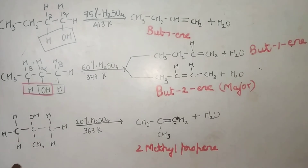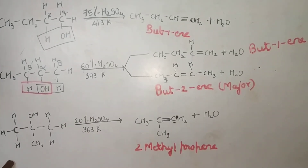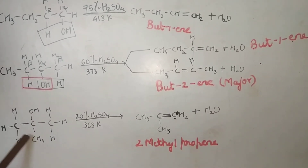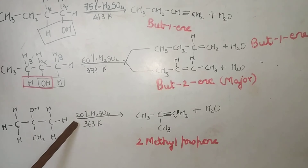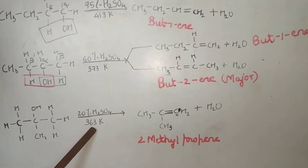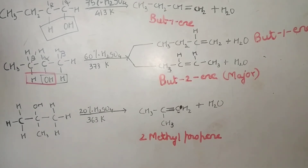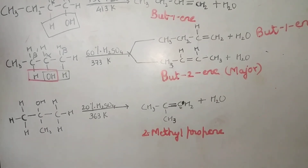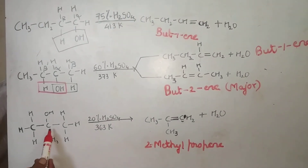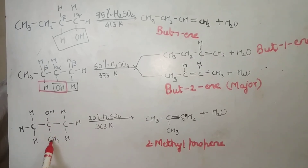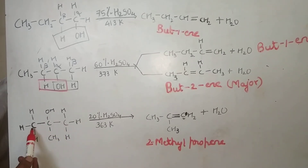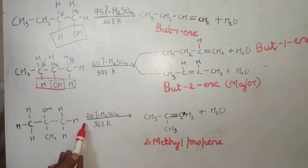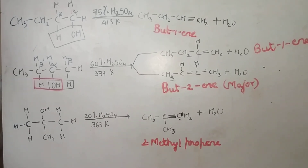This is an example of a tertiary alcohol — the carbon carrying the OH group is bonded to three adjacent carbon atoms. A tertiary alcohol — 2-methylpropan-2-ol — when treated with 20% H2SO4 at 363 K, there is formation of 2-methylpropene along with H2O.